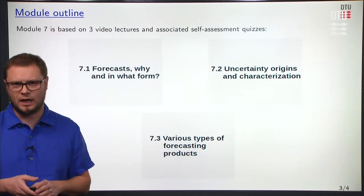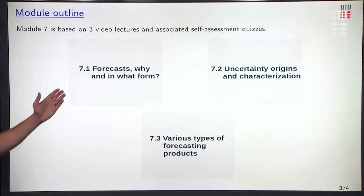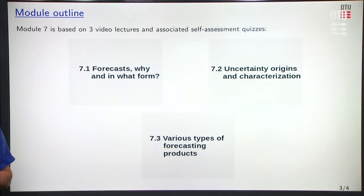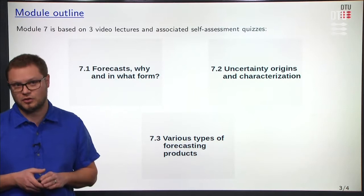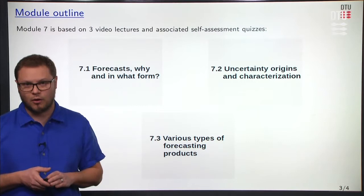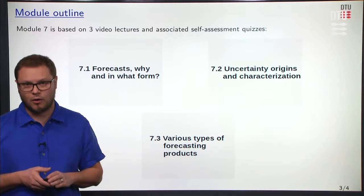In practice, module 7 is based on three video lectures and the related self-assessment quizzes. In the first block we look at the forecasts themselves — why do we forecast and in what form will this forecast be. In the second block we look at uncertainty origins for renewable energy forecasts and characterization of that uncertainty. Finally, we'll zoom in onto the various types of forecasting products, going from their definition to how they are being used and how they're going to be visualized.